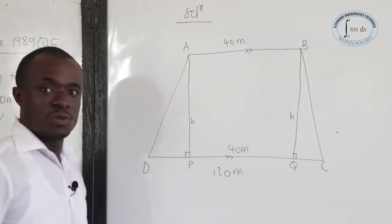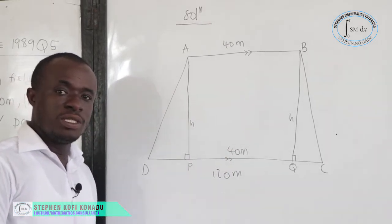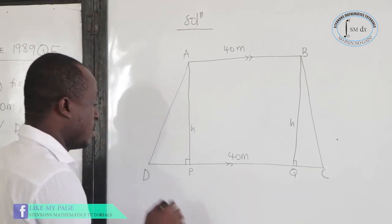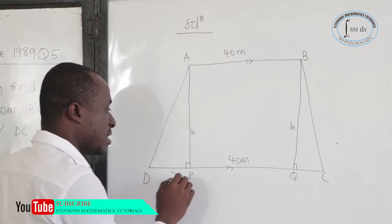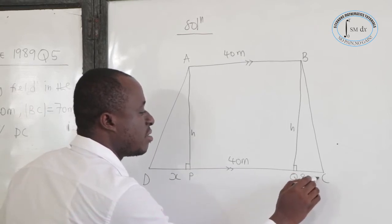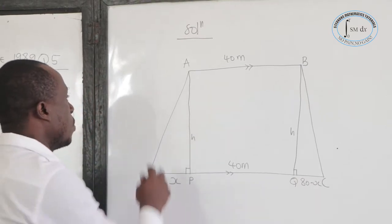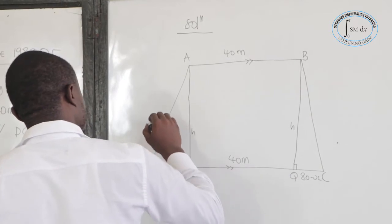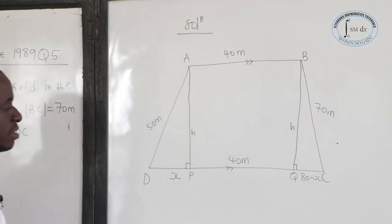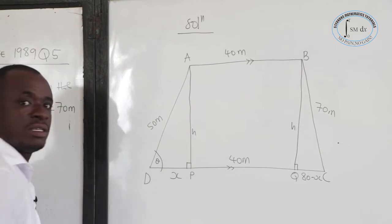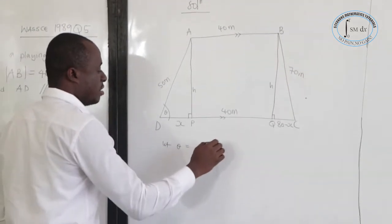From D to C is 120, and PQ is 40, so the remaining is 120 minus 40, which is 80. So DP plus QC equals 80. If DP is X, then QC becomes 80 minus X, because this side plus that side equals 80. We know AD is 50 meters and BC is 70 meters. Let theta be equal to angle ADC.